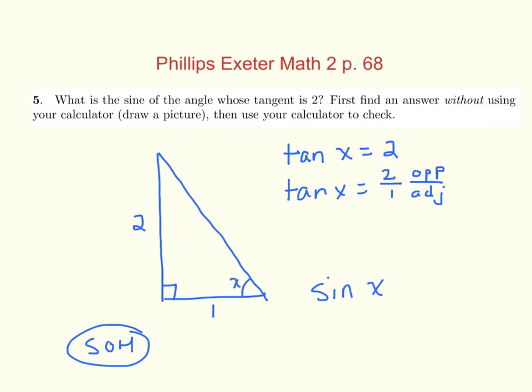You should be able to do this without even writing down the Pythagorean theorem. What is the length of that side? Root 5. Perfect. 2 squared is 4, 1 squared is 1, 4 plus 1 is 5, square root 5.